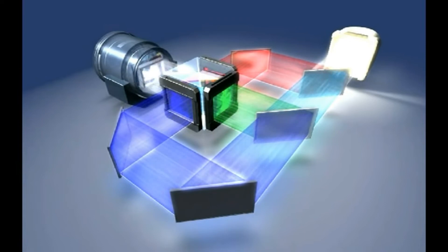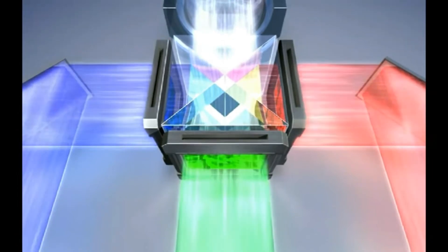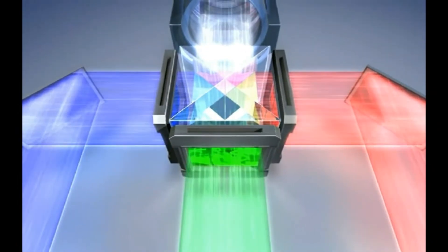The second dichroic mirror divides green and blue, completing the separation of three beams of light. The three beams are then directed towards the three dedicated LCD chips.